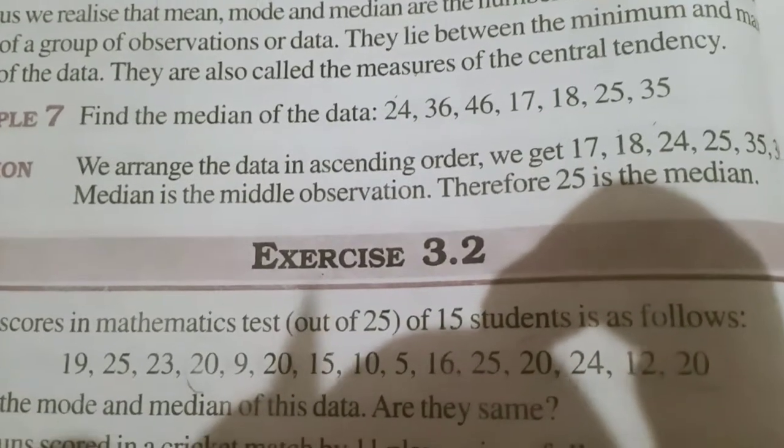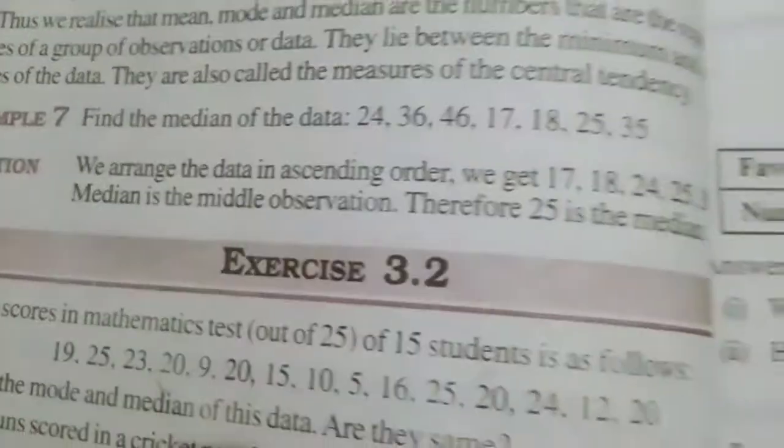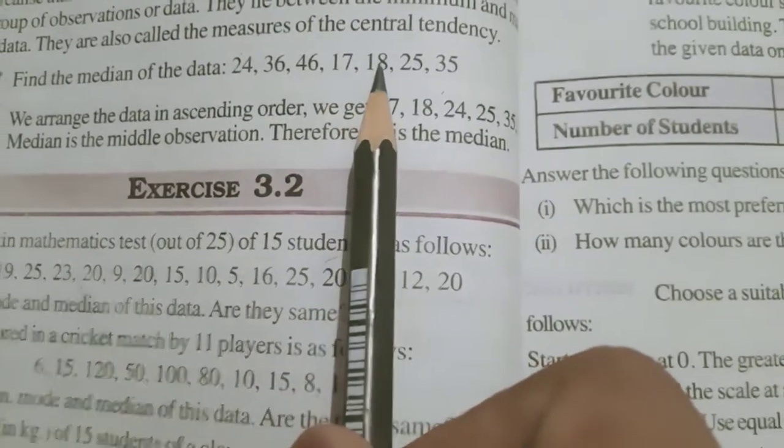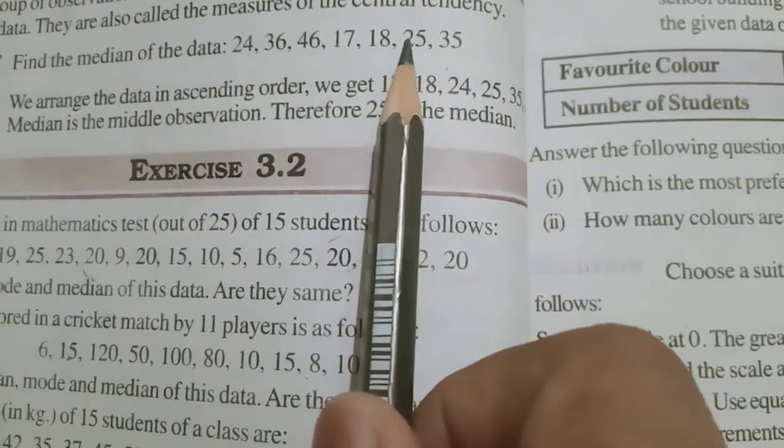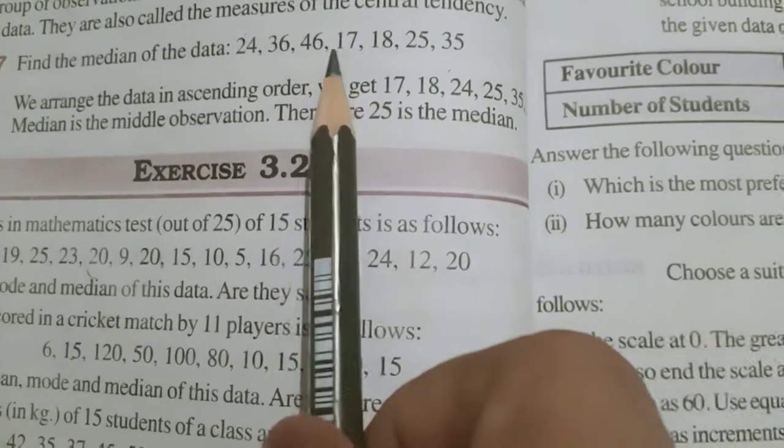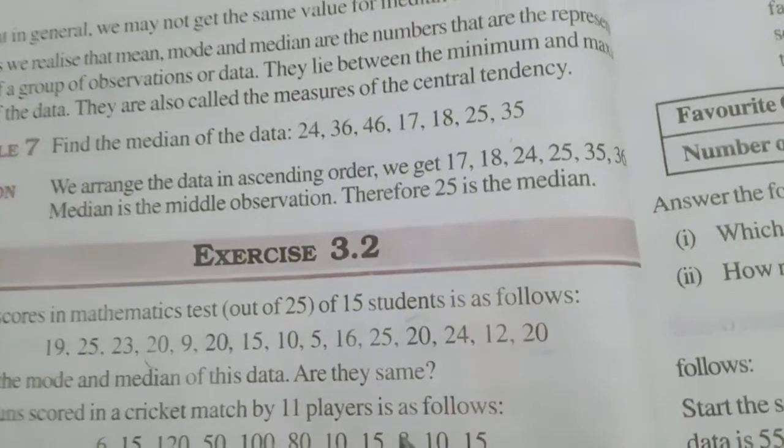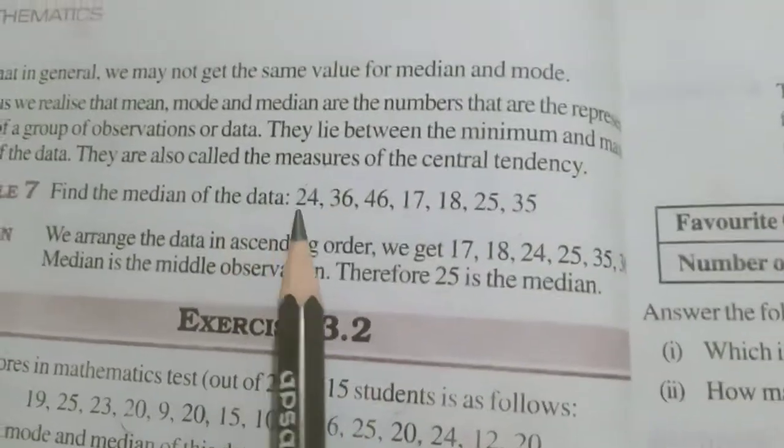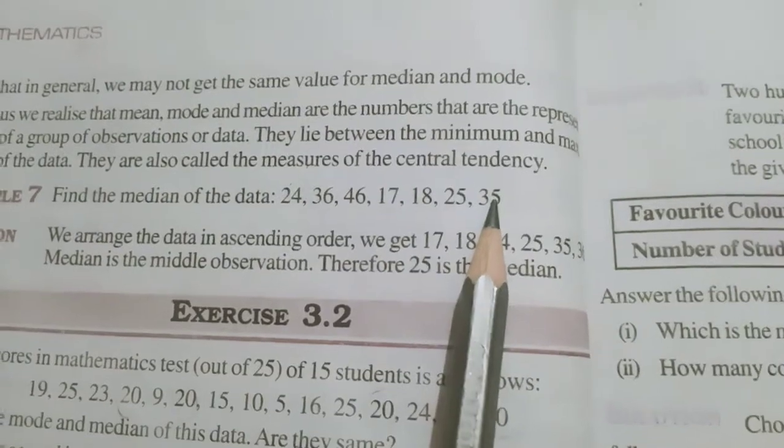For ascending order, first we find the smallest number. From this observation, 17 is smallest. Then we write 17, 18, 24, 25, 35, 36 and 46. These are in ascending order. Is it okay? See the terms are given in ascending order. Now, what is the middle observation? See how many total numbers are given there? 1, 2, 3, 4, 5, 6, 7. 7 half means 3.5.